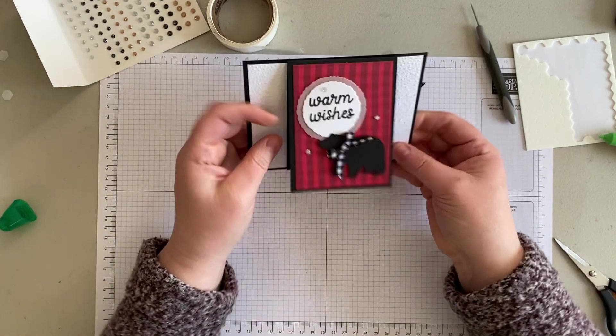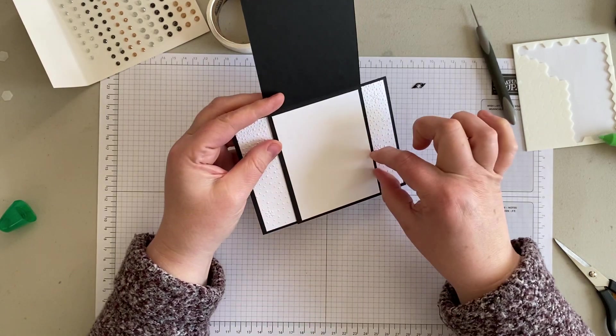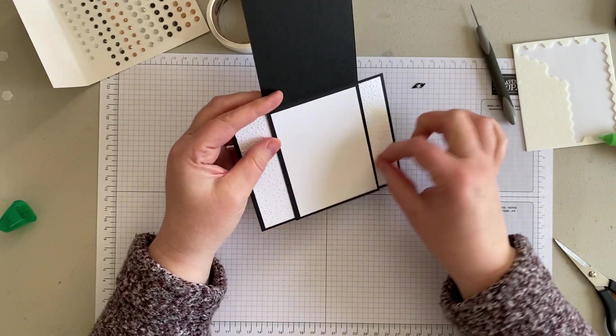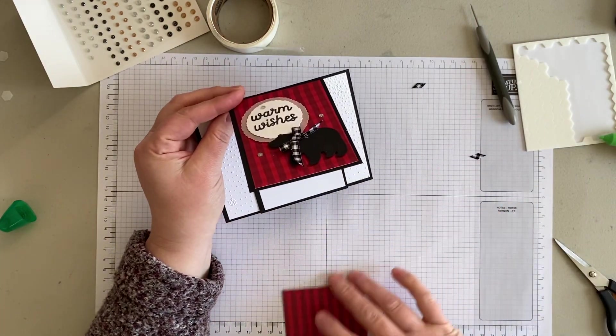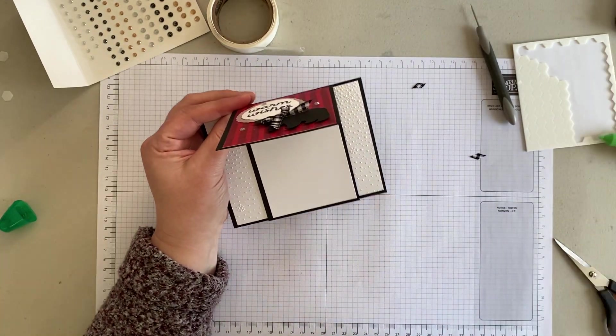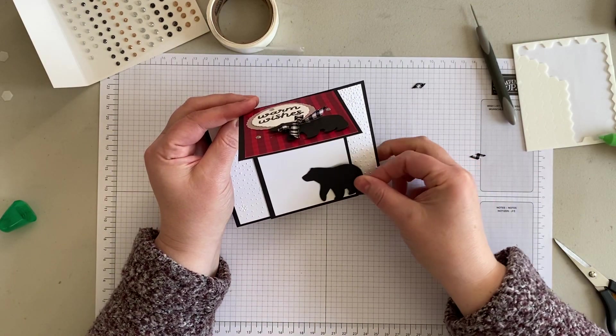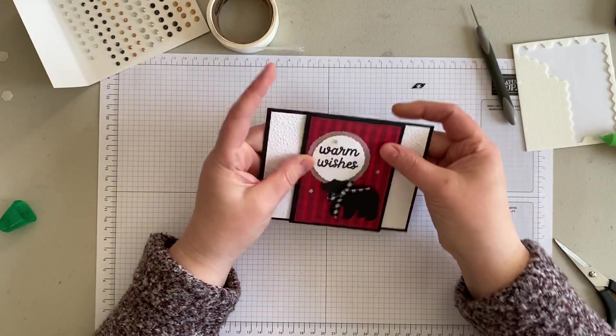I think it would also look really nice if you added just a little strip of the red buffalo plaid in there. I might go ahead and just cut a thin little strip because I think that would look nice. Or you could also put a bear. Super cute.